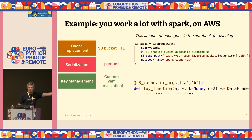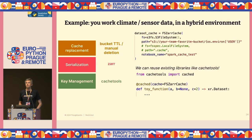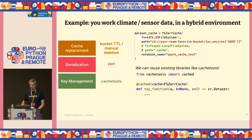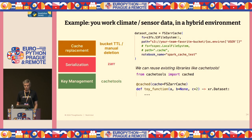Different scenario: you work on climate tech with lots of sensor data, multidimensional arrays, in a hybrid cloud/local environment. For serialization, Zarr is a great library for very compact multi-dimensional array storage. And `cachetools` is actually a great integration point here — people get the familiar API right out of the box, it works like the standard library, with very little effort. A helpful tip: use FSSpec and similar tools that let you treat cloud storage like a local filesystem, which limits maintenance overhead.